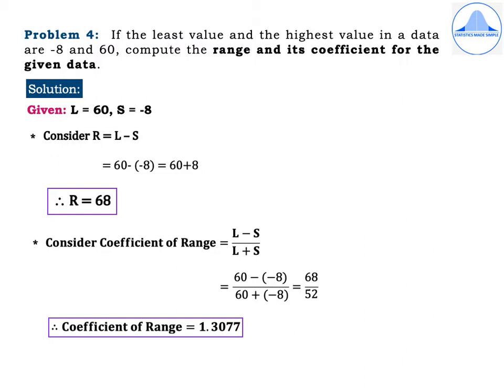Problem 4. If the least value and the highest value in a data are −8 and 60, compute the range and its coefficient. Given L = 60 and S = −8. R = L − S = 60 − (−8) = 60 + 8, so R = 68. The coefficient of range = (L − S) / (L + S) = 68 / (60 + (−8)) = 68 / 52. Therefore, the coefficient of range is equal to 1.3077.